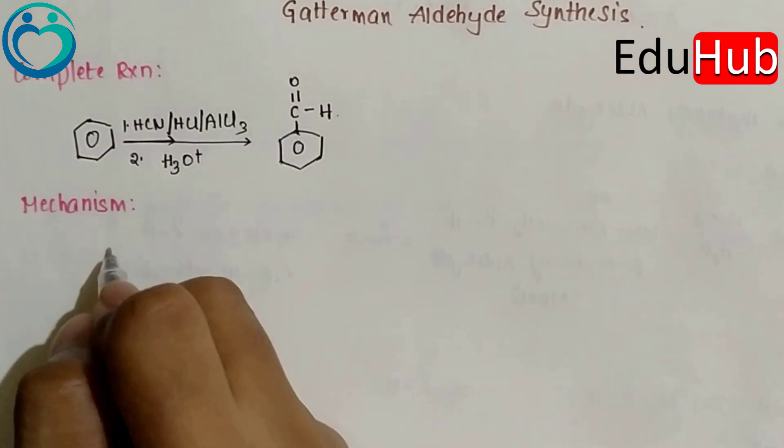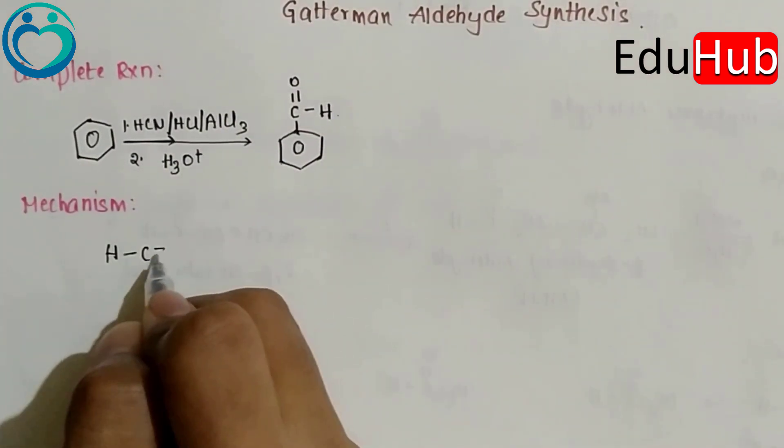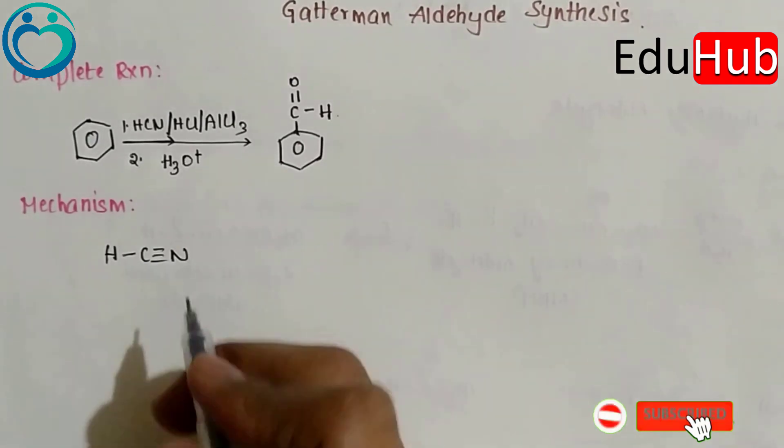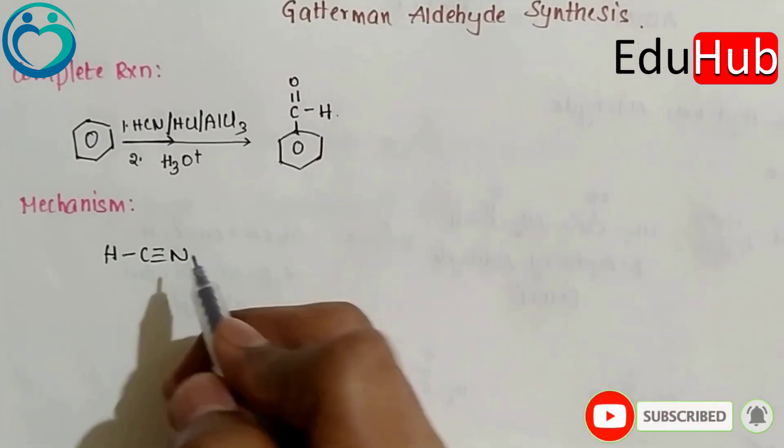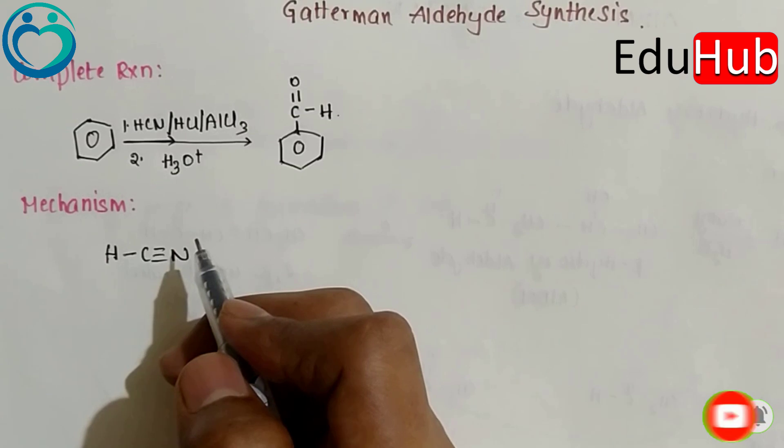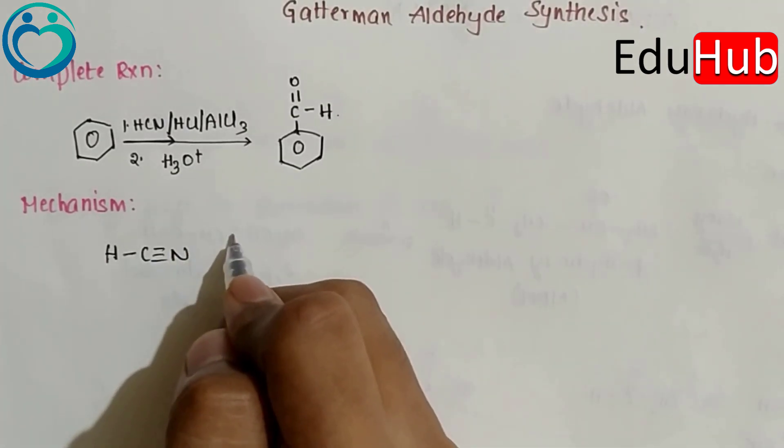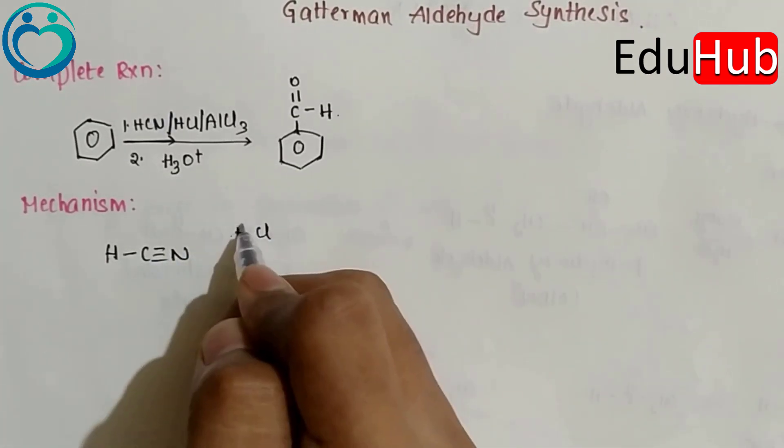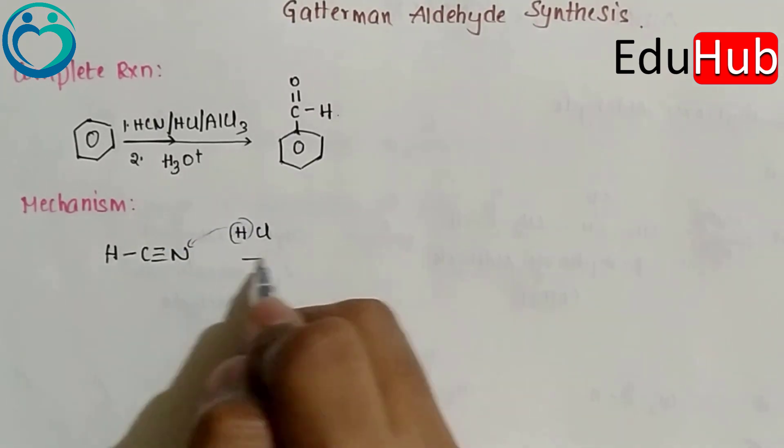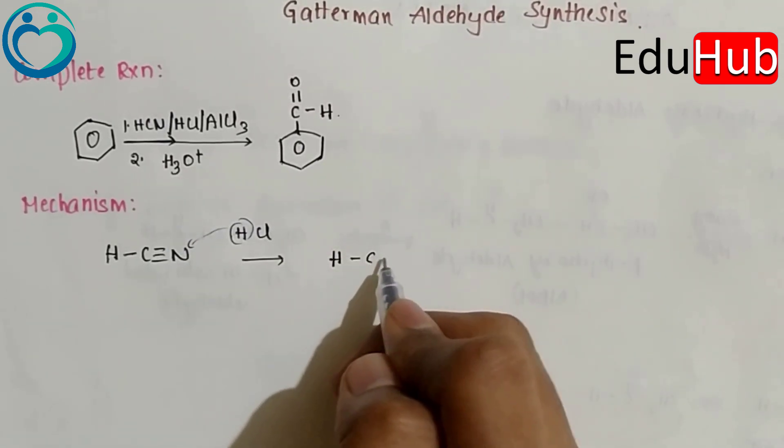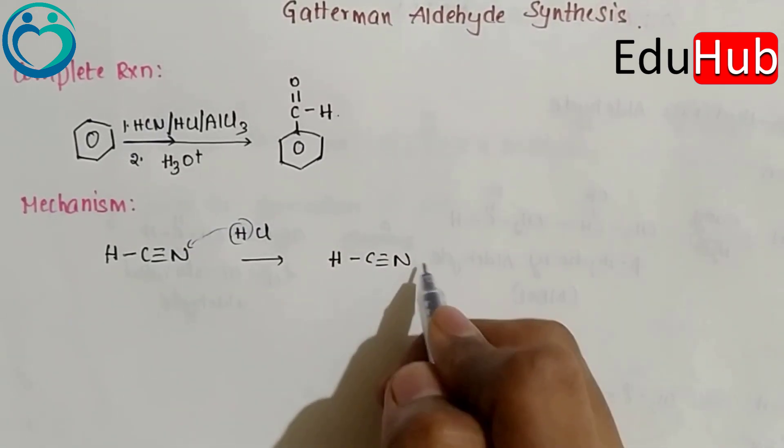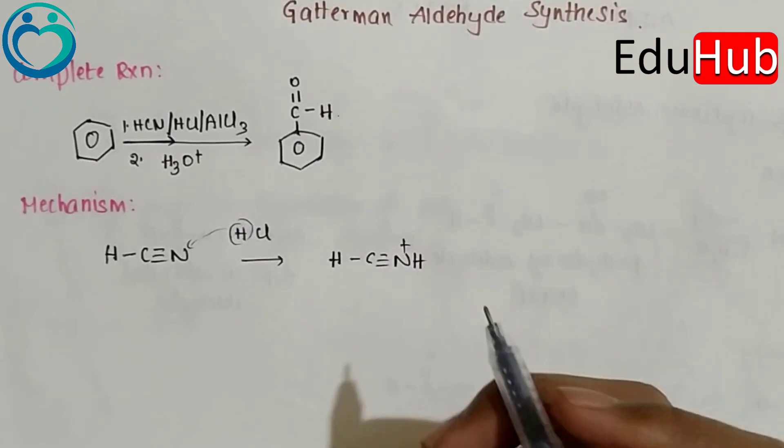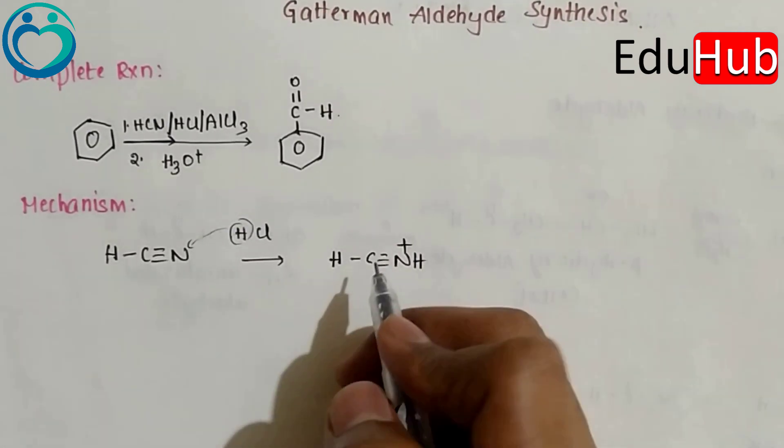First there is HCN, right? HC triple bond N. Now this N, as there is a lone pair, it takes H+ from HCl and it forms HC triple bond NH+, N+ because there are four bonds now.